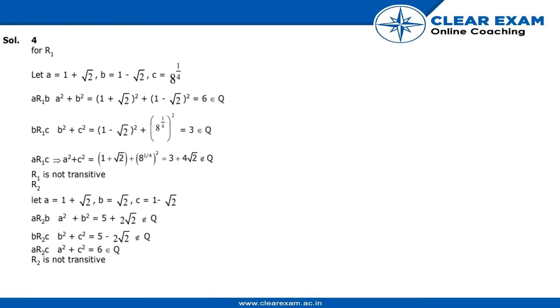Then b R1 c would be b squared plus c squared, which would give us answer 3, which also is a rational number which also belongs to Q. And then in the final situation we would compute a R1 c, where a squared plus c squared would be 3 plus 4 root 2, which does not belong to Q, or which is not a rational number. So R1 is not transitive.